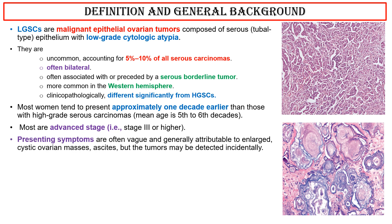Presenting symptoms are often vague and generally attributable to enlarged cystic ovarian masses and ascites, but the tumors may be detected incidentally. They show elevated serum CA-125 levels.